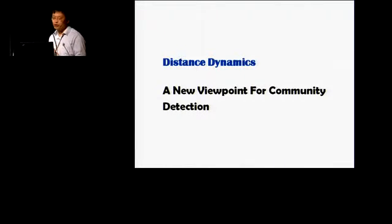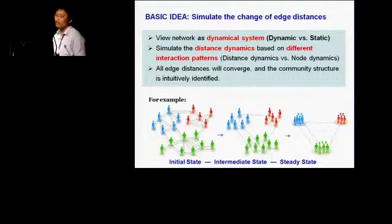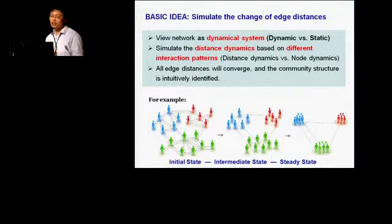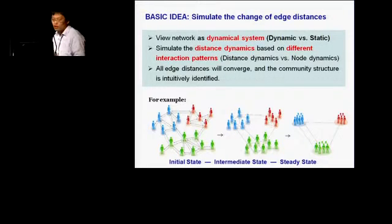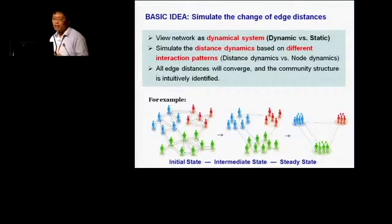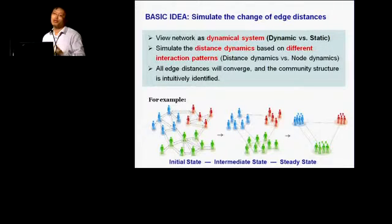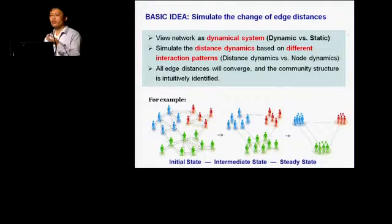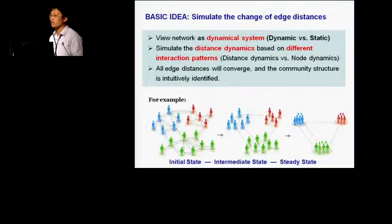In this talk, I will introduce a new viewpoint for community detection, which is distance dynamics. The basic idea is quite simple: we want to simulate the change of edge distance over time and automatically find communities over time. We view a given network as a dynamic system, then simulate the distance dynamics based on different interaction patterns. We will see all edge distances converge to stable states, which we call attractors, and the community structure can be intuitively identified.